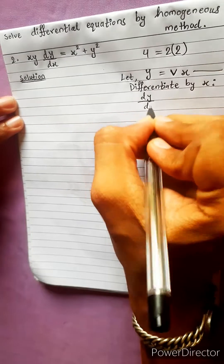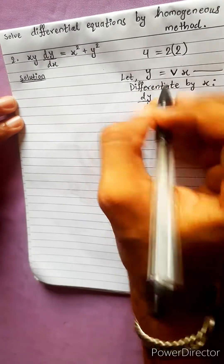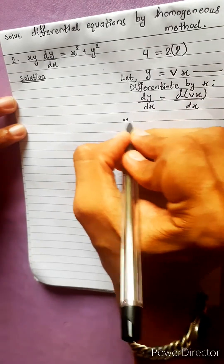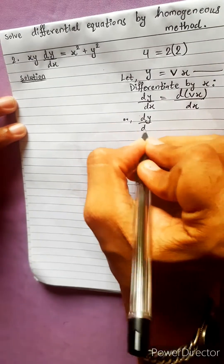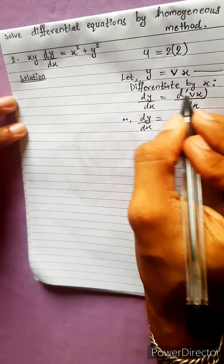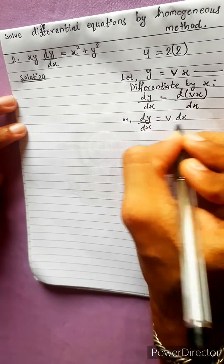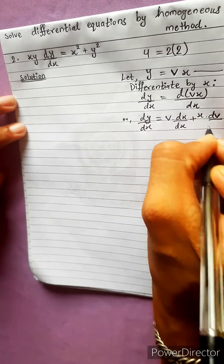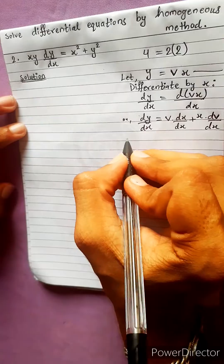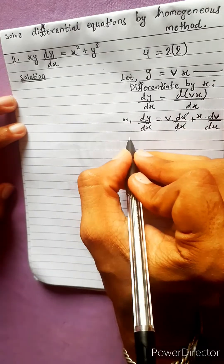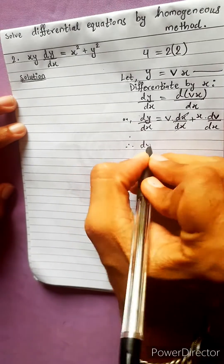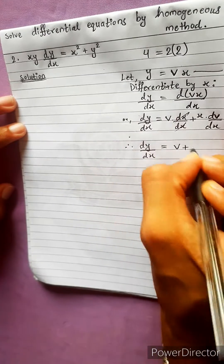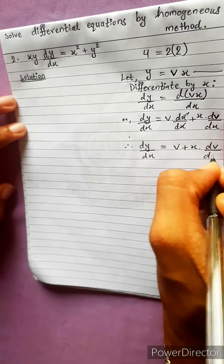dy by dx. This equation will be differentiated by dx. Let's cancel y here. Therefore, dy by dx equals to v plus x dv by dx.